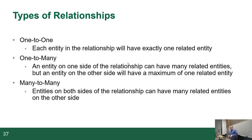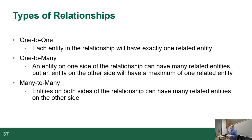Many-to-many is when entities on both sides of the relationship can have many interrelated records on either side. A good example would be students and courses — students have many courses and each course has many students. Now, one-to-one and one-to-many can be designed physically, but many-to-many needs to be resolved, because database servers cannot do many-to-many. They used to allow it before they started enforcing the rules, and it was always a bad idea.